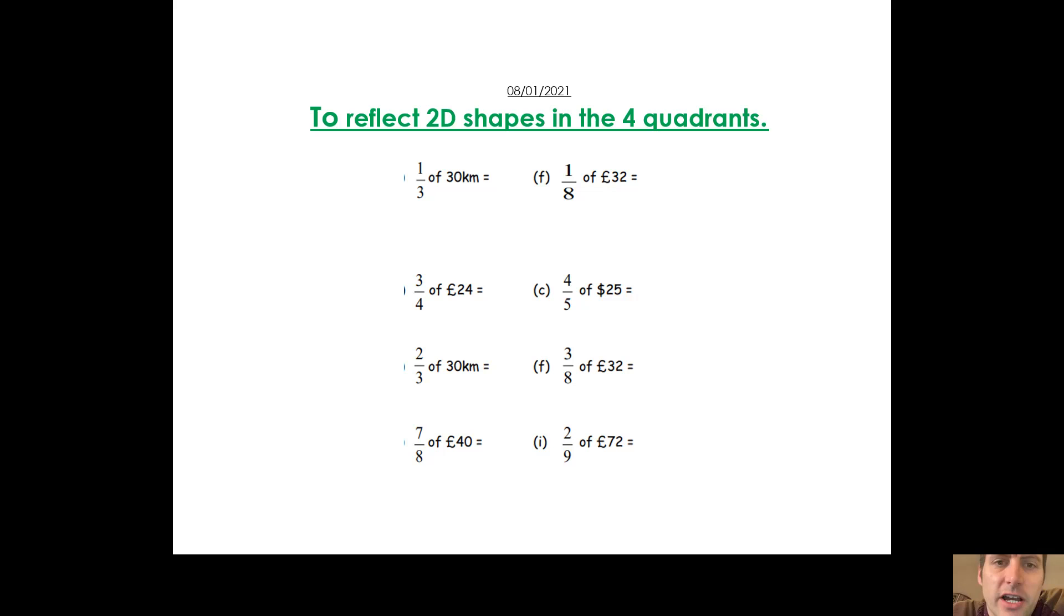Hopefully you've identified that we're dividing by denominator and multiplying by numerator. One third of 30 kilometres: 30 divided by 3, so 10 multiplied by 1, equals 10. As we go through: divide 24 by 4 to make 6, multiply by 3 to make 18. Divide 30 by 3 to make 10, multiply by 2 to make 20. Divide 40 by 8 to make 5, multiply by 7 to make 35. 32 divided by 8 multiplied by 1 equals 4. 25 divided by 5 is 5, multiplied by 4 is 20. 32 divided by 8 is 4, multiplied by 3 is 12. 72 divided by 9 is 8, multiplied by 2, so 2 ninths of 72 is 16. Hopefully you got all those right.